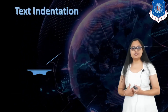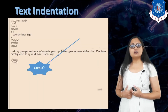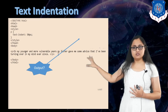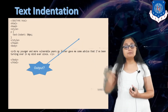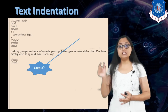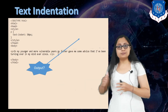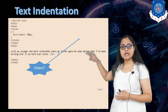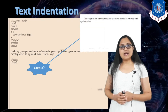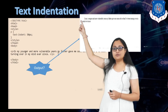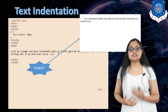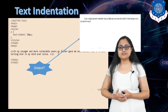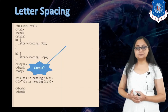Let us see each individually. For text indentation, here I have a paragraph with the text-indent property specified. The property name is text-indent and you can specify values in pixels or percentage — I have specified 50px. So you can see there is a 50px space before the paragraph starts, meaning the first line of the paragraph will begin after 50px of space.